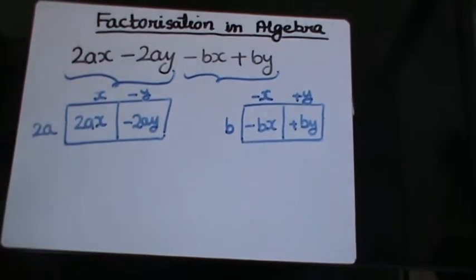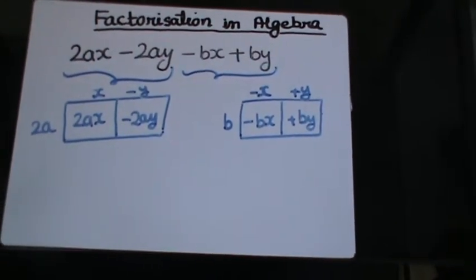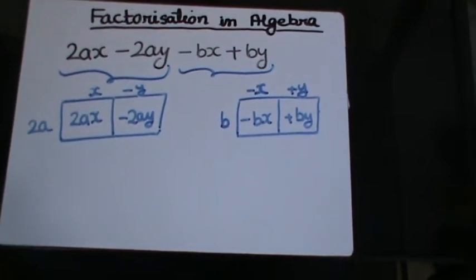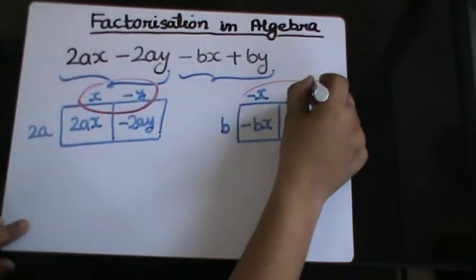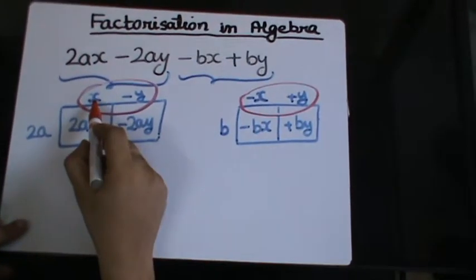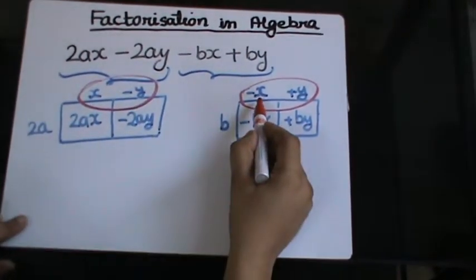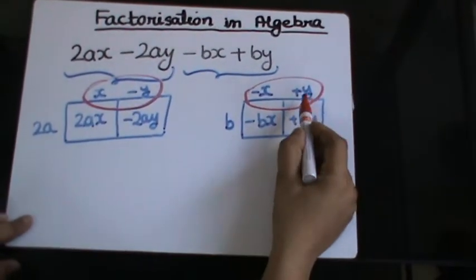Now these elements that I get here are not same. This one and this one should be identical. So here it is positive x and here it is negative, and negative y and positive y. They are not equal.